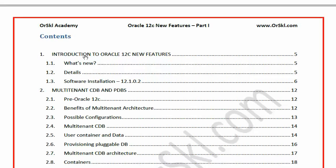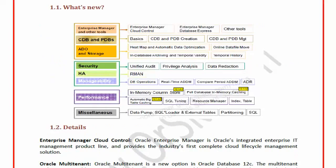Let's see what's new in Oracle 12c in a good overview picture. As you see on the screen, 12c has come up with all the features listed on the left-hand side. Features specifically added in 12.1.0.2 are highlighted on screen — meaning those features are not available in 12.1.0.1. So our course covers new features of 12.1.0.2, which also includes all features from 12.1.0.1.